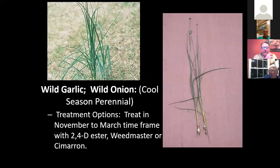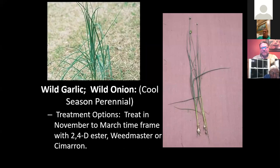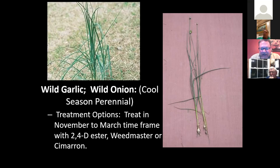Wild garlic and wild onions — again, it's a cool season perennial, so it's going to come back every year. You've got to spray herbicide on it to get it under control. There are several options with excellent control. Excellent control means about 80 to 85 percent, maybe 90 percent. Don't expect to get 100 percent control in one application because most of the time you're not going to get that kill.